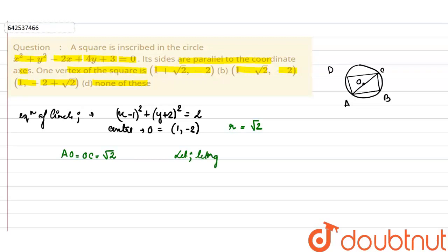Let the length of the side of the square be a. Therefore, the length of the diagonal will be √2a.